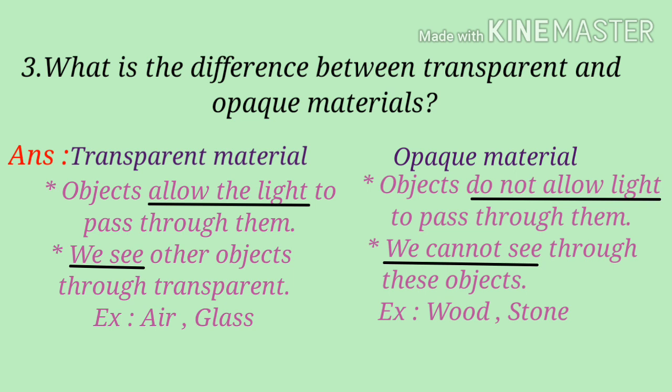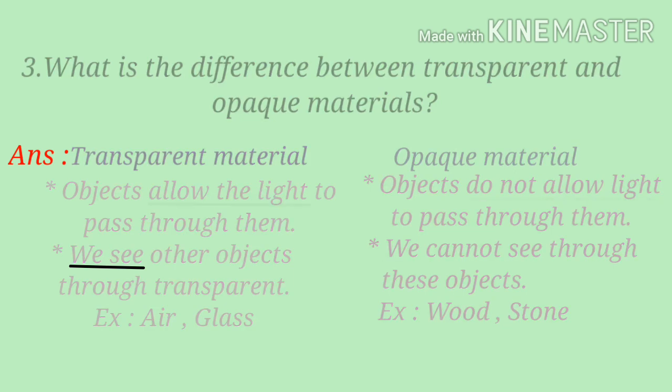Again, I am reading from the beginning. What is the difference between transparent and opaque material? Transparent: objects allow the light to pass through them. Opaque: objects do not allow light to pass through them. Transparent: we see the other objects through transparent. Opaque: we cannot see through these objects. Example transparent: air, glass. Example opaque: wood, stone.